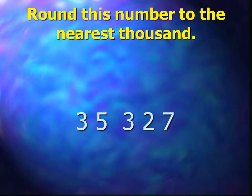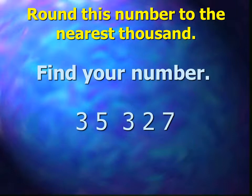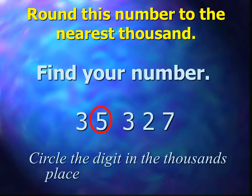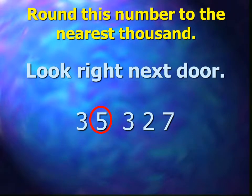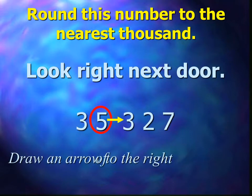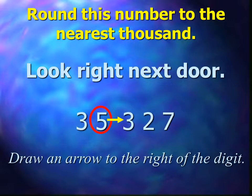Here is another example. Round this number to the nearest thousand. First, find your number. Circle the digit in the thousands place — in this case, the digit five. Look right next door. Draw an arrow to the right of the digit. In this case, the arrow is pointing to the hundreds place, the digit three.